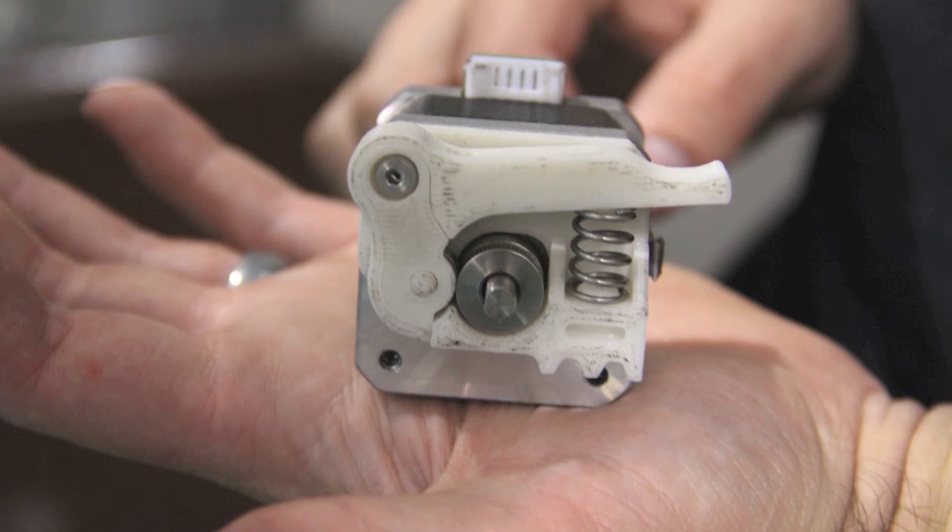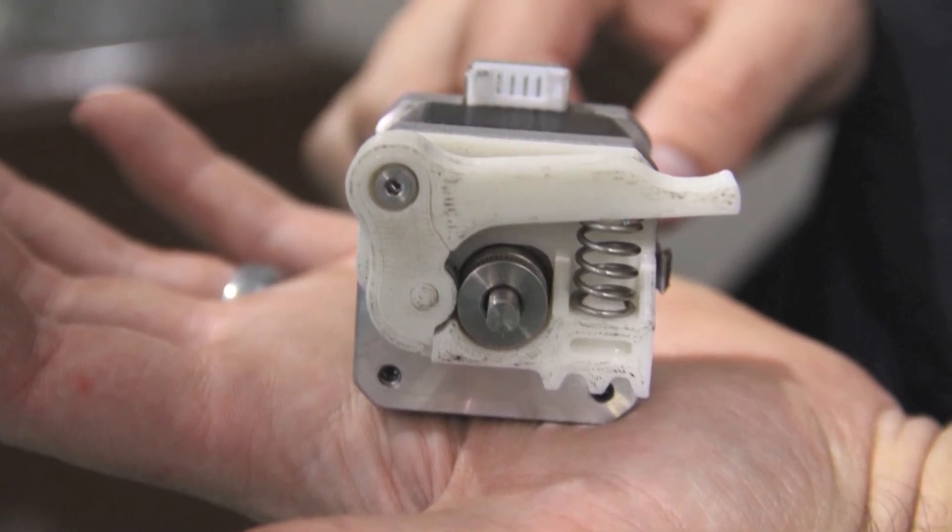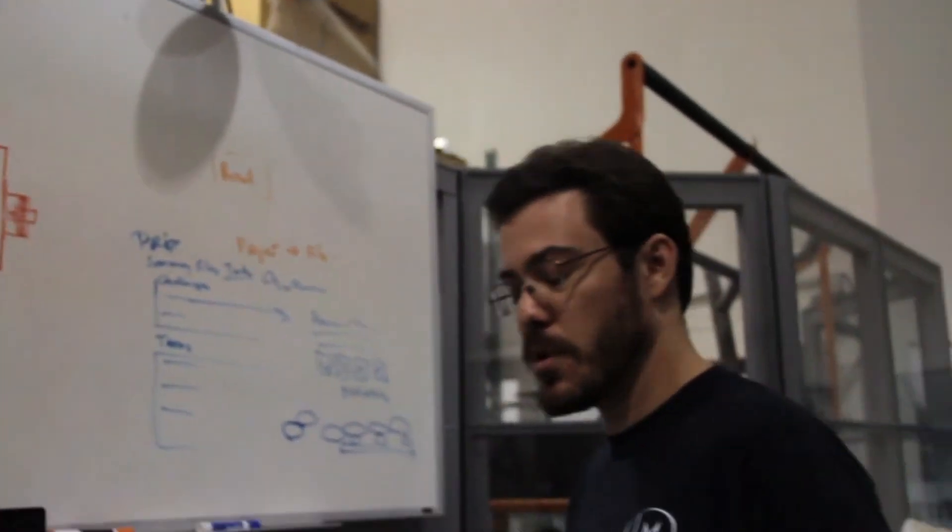So I ground this down so that we had a flat spot all the way down to the base of the shaft, re-tightened it, and it's been working beautifully. It's been printing absolutely wonderfully for the last ten or so hours of printing.